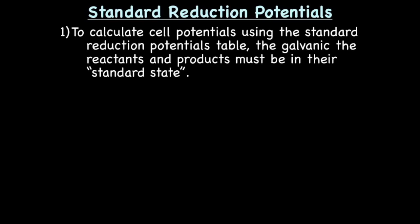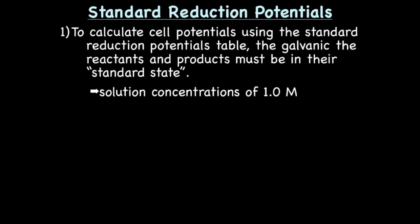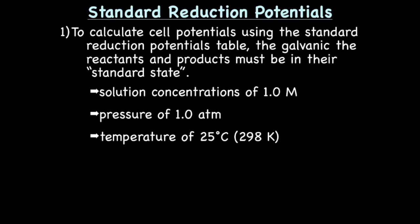Standard reduction potentials. To calculate cell potentials using the standard reduction potentials table, the galvanic cell reactants and products must be in their standard state. The solution concentrations must be 1 molar, the pressure must be 1 atm, and the temperature is 25 degrees Celsius or 298 K. It's only under those conditions that we can use the standard reduction potentials table to calculate cell voltages.